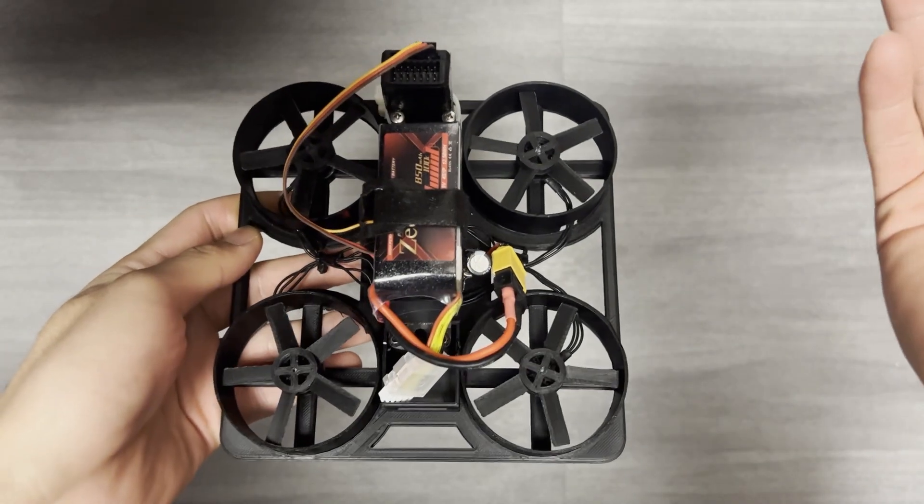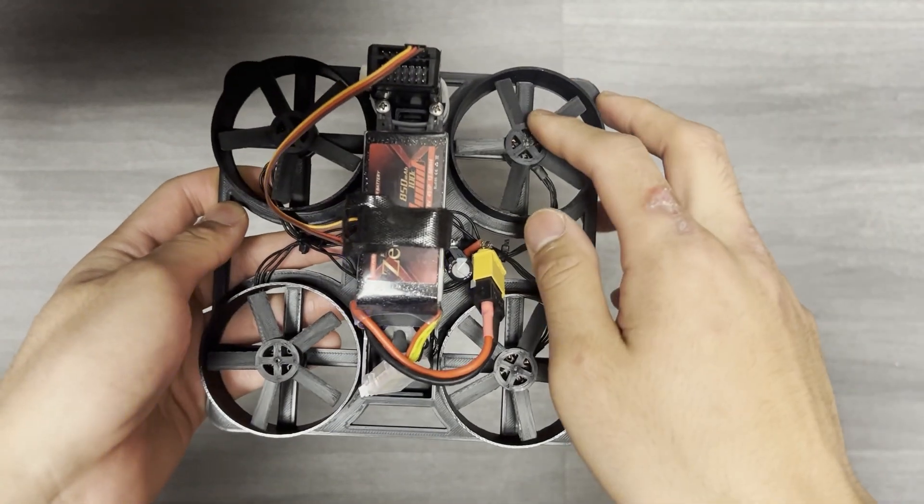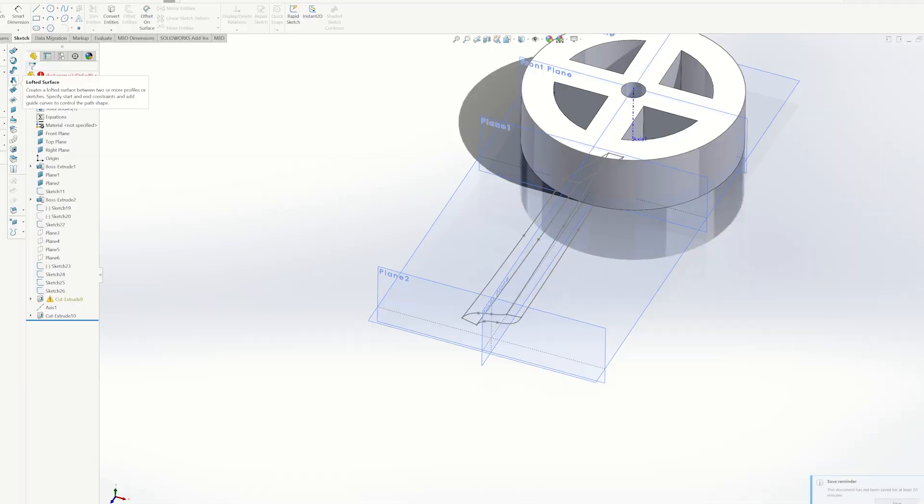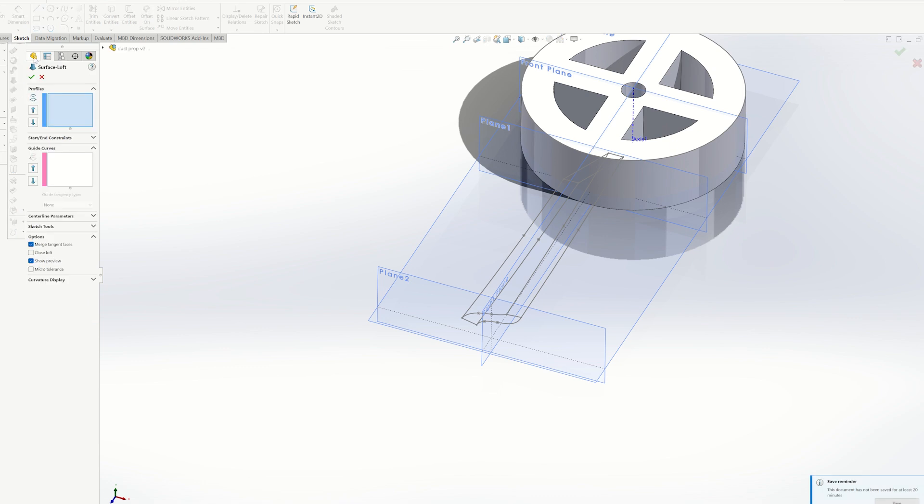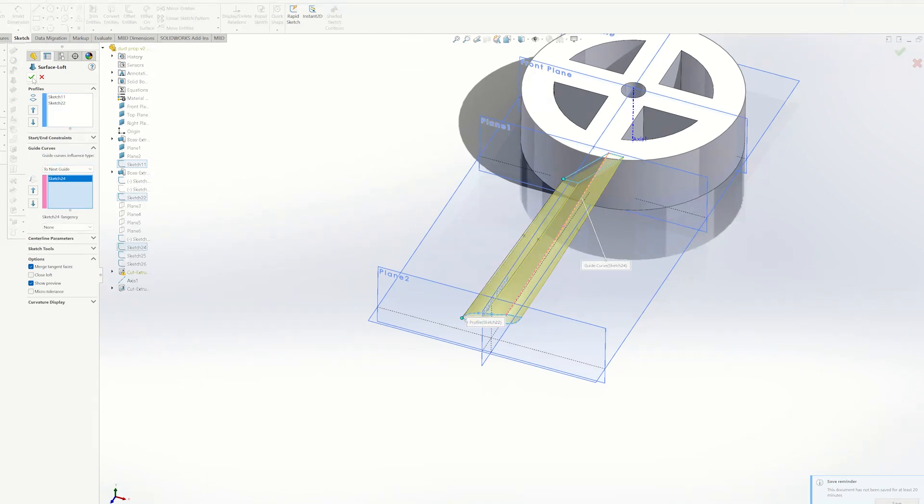And the only other major change from last video is the fan design. So I decided to man up and learn some surfacing on SOLIDWORKS, which turned out to be pretty easy. I've surface modeled on Fusion before. SOLIDWORKS is actually almost more intuitive, I think, to pick up.